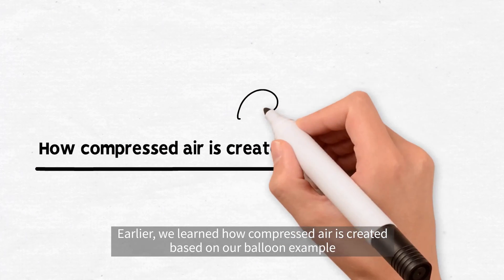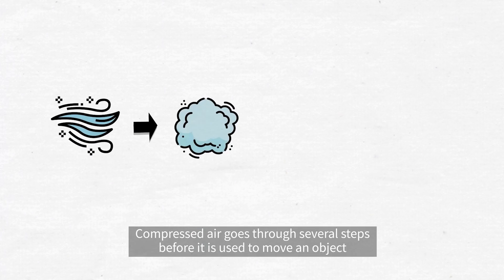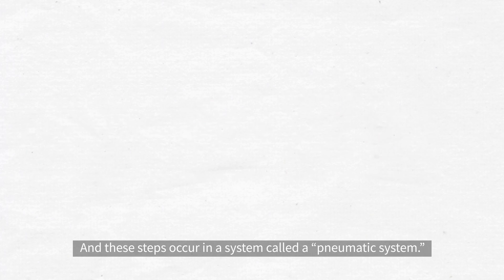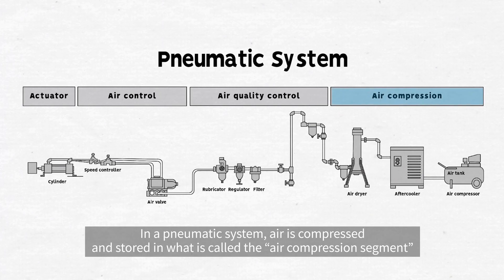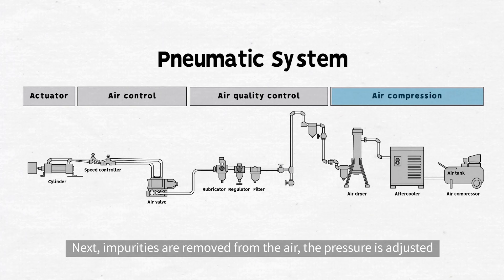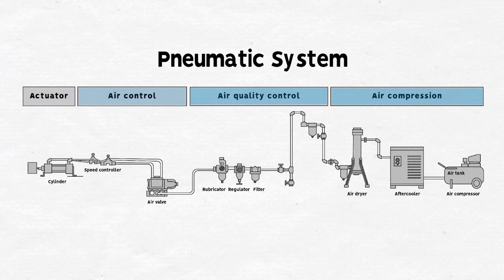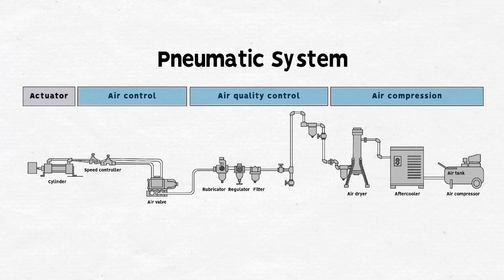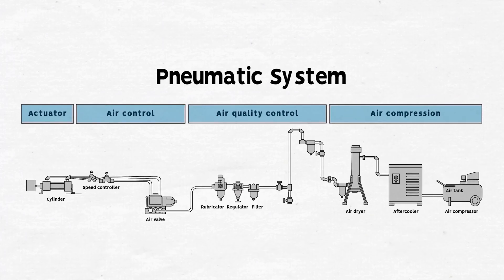Earlier, we learned how compressed air is created based on our balloon example. Compressed air goes through several steps before it is used to move an object, and these steps occur in a system called a pneumatic system. In a pneumatic system, air is compressed and stored in what is called the air compression segment. Next, impurities are removed from the air, the pressure is adjusted, and other conditions of the compressed air are adjusted in the air quality control segment. Then, the direction and speed of the air movement are controlled in the air control segment. Finally, the segment that moves an object is called the actuator segment.